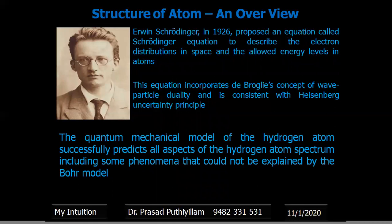Erwin Schrödinger in 1926 proposed an equation called the Schrödinger equation to describe the electron distribution in space and allowed energy levels in atoms. This equation incorporates de Broglie's concept of wave-particle duality and is consistent with Heisenberg's uncertainty principle, giving rise to the quantum mechanical model. It successfully predicted all of the hydrogen atom spectrum, including some phenomena that Bohr's model could not explain.